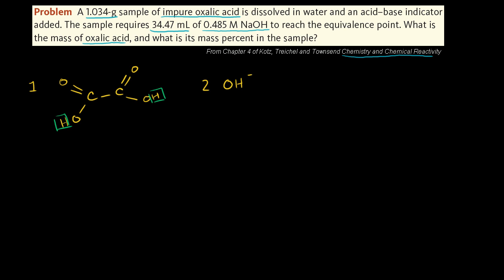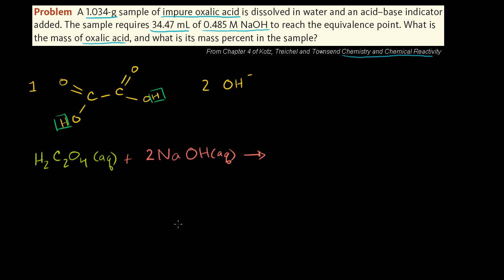Let's draw the balanced equation. We start with oxalic acid: H2C2O4 in aqueous solution, and we add 2 sodium hydroxide, also in aqueous solution. We need two hydroxides to fully neutralize the oxalic acid. Once the reaction happens, the oxalic acid will have lost both hydrogen protons, leaving C2O4 with a negative 2 charge.